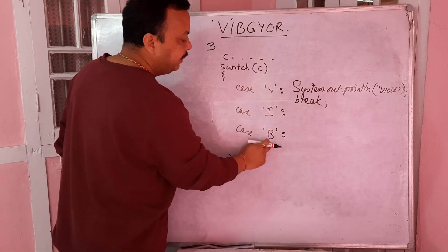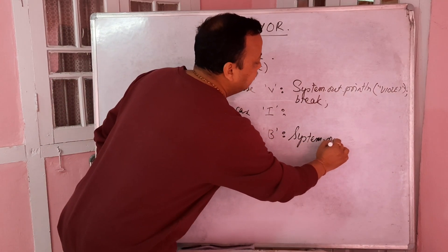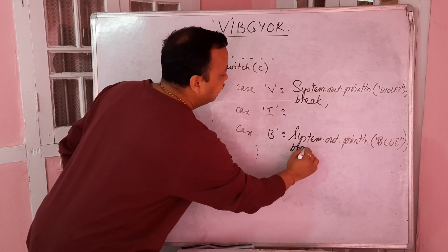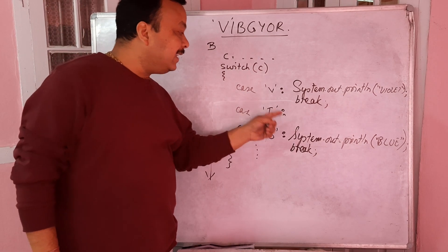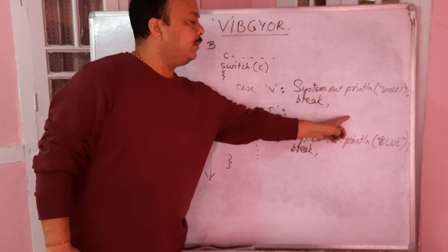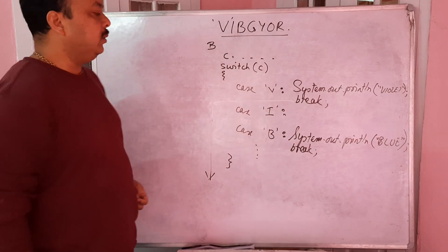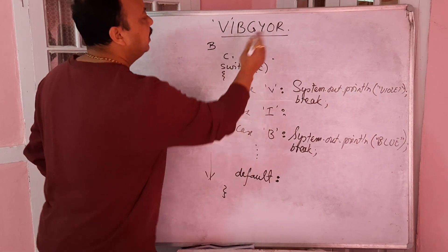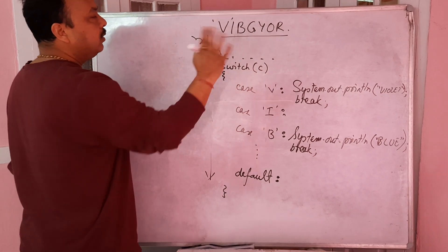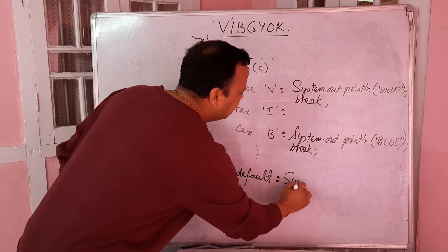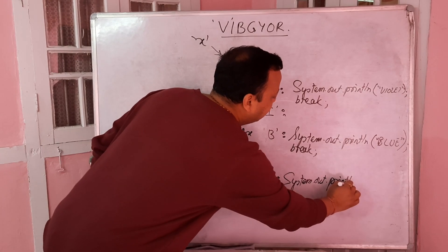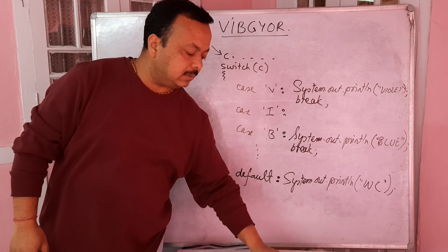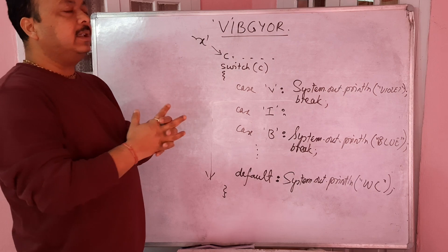If it doesn't match 'v', you check if it matches 'b': System.out.println("Blue") followed by break. You also write case 'i': System.out.println("Indigo") with a break. If none of the characters match - for example the user inputs 'x' which has no color code - you use the default case: System.out.println("Wrong choice"). This is the purpose of using switch case.